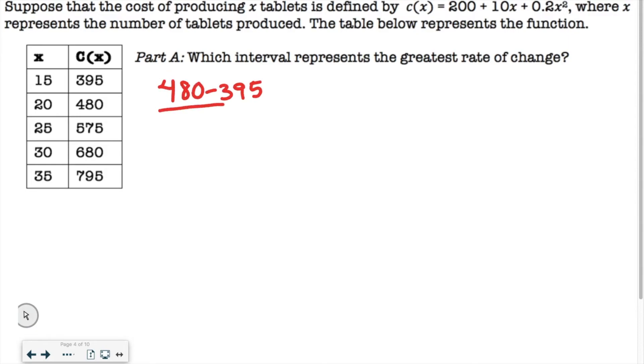So we need to first do 480 minus 395. Remember, it's the second point minus the first. And then this is your Y value. Remember, any time it's C of X, that's also known as the Y, or F of X, or G of X, or anything letter of X, that's the Y value, and then 20 minus 15, because we're going from the second point to the first point. So 480 minus 395 is 85. And then 20 minus 15 is 5. So you have to divide your 85 by 5, and you get 17.